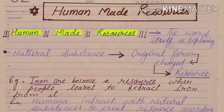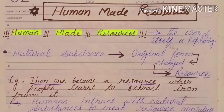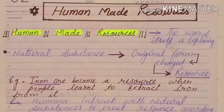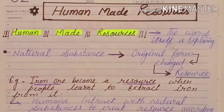For example, iron ore is extracted and people have made resources like buildings, bridges, and roads. Buildings can be used for living, bridges can be used to cross rivers, and roads can be used for transport. These are made from natural substances such as cement, iron rods, charcoal, and bricks.